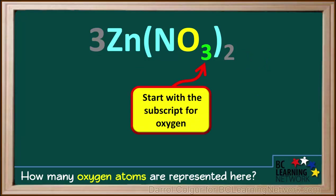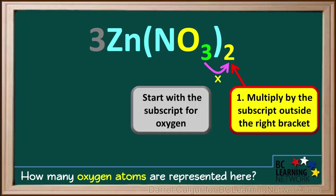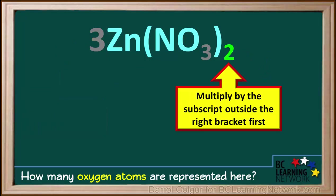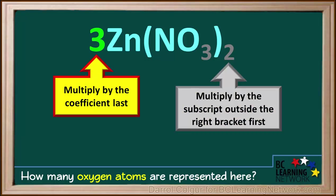To review, for formulas with both brackets and a coefficient, we start with the subscript on the oxygen, and the first thing we do is multiply it by the subscript just outside the right bracket. And lastly, we take the resulting number and multiply it by the coefficient in front of the formula. This will give us the total number of oxygen atoms. Remember, in this type of problem, it is important that we always multiply by the subscript outside the right bracket first, and lastly multiply the answer we got for this by the coefficient in front.